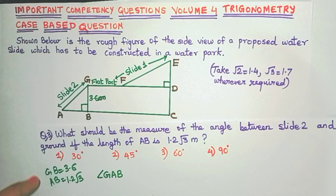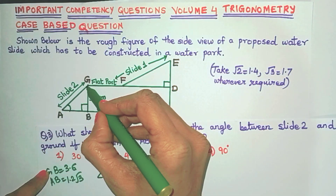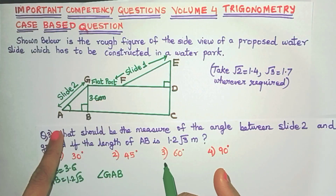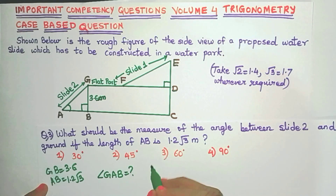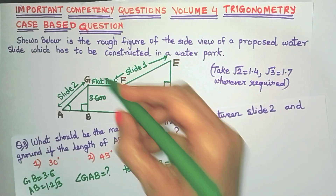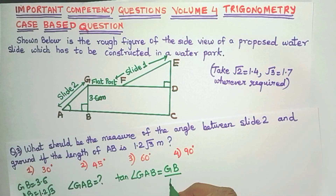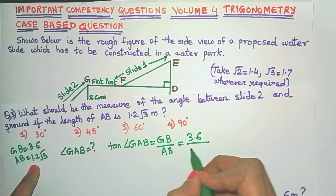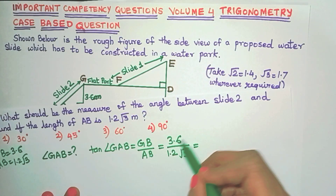Which trigonometric ratio connects GB and AB? For angle GAB, GB is the opposite side and AB is the adjacent side. Since opposite and adjacent sides are given, we use the tan ratio. So tan(GAB) = opposite/adjacent = GB/AB = 3.6 / 1.2√3.